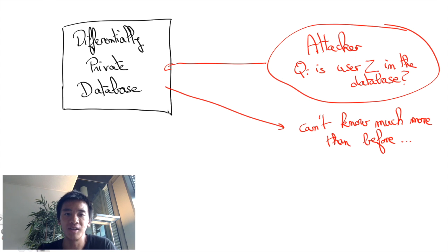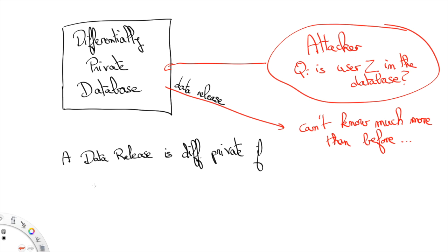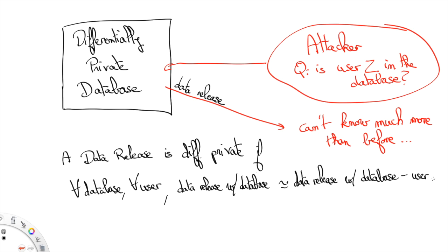Now, a bit more formally, a data release is differentially private if, for any database and any user, the data released from the database is nearly the same as the data released from a hypothetical database from which all the data that corresponds to the user gets deleted. All the difficulty now lies in the word nearly.